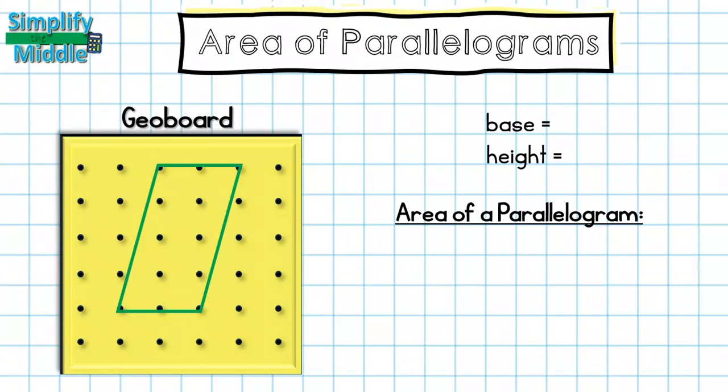For our final example, we're going to look at one on a geoboard. I still need the height and the base. Area equals base times height. If I go in this section right here, I can see that my height from top to bottom is 4, and then it makes a 90 degree angle both here and here, so I can use either of those for the base. I'm going to use the top here and I end up with a base of 2. So my area for my parallelogram is 2 times 4, or 8 units squared.